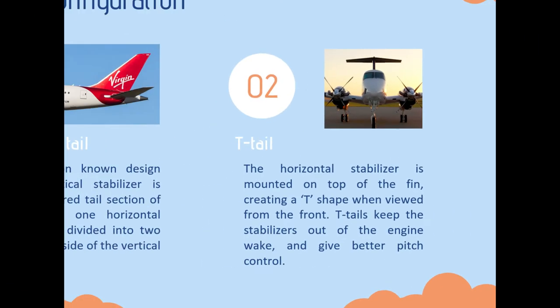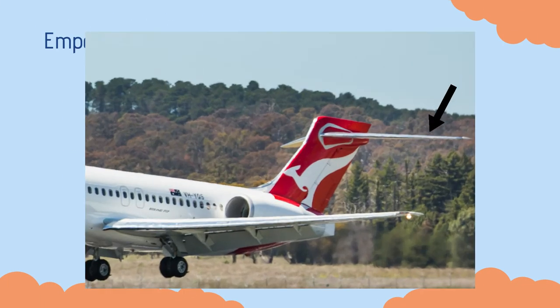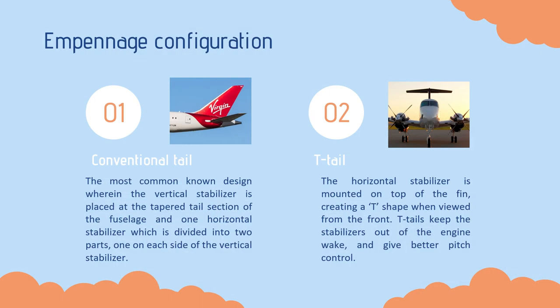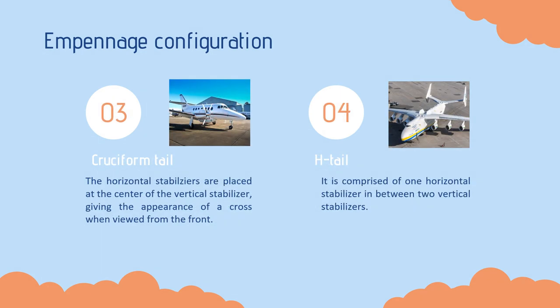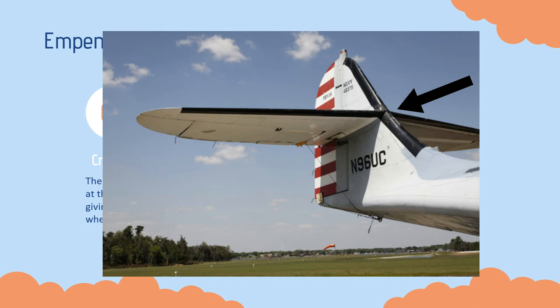The second one is the T-tail. The horizontal stabilizer is mounted on top of the fin, creating a T-shape when viewed from the front. T-tails keep the stabilizers out of the engine wake and give better pitch control. The third one is the cruciform tail. The horizontal stabilizers are placed at the center of the vertical stabilizer, giving the appearance of a cross when viewed from the front.